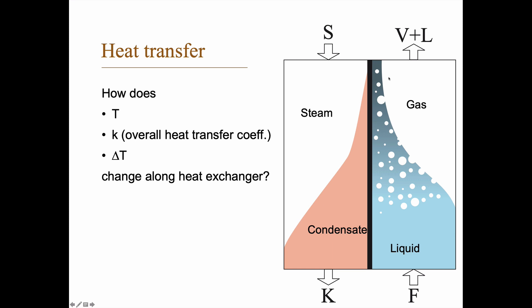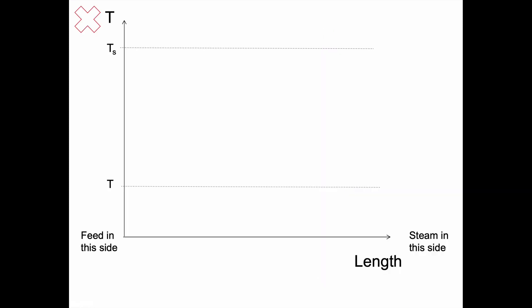Now think through how the temperature, the overall heat transfer coefficient, and the temperature difference between the two sides change along the heat exchanger. You can think of different sections here. There's one section where you might have overheated steam with a temperature above its condensation temperature, and a part where you have the condensate coming out at a temperature below the condensation temperature. On the other side you might have a point up to which everything is liquid. So try to make a diagram for temperature. Pause here and try for yourself.